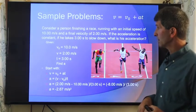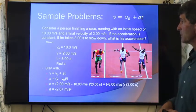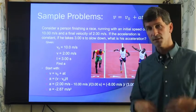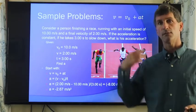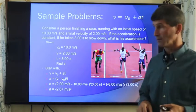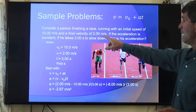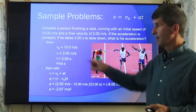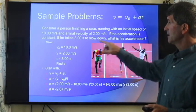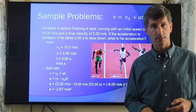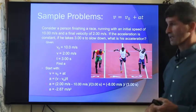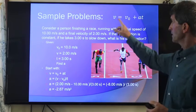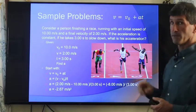I'll do another example, using the same equation. Consider a person finishing a race, running with an initial speed of 10 meters per second. So this is after the race. They've sprinted down the track, they're at 10 meters per second, they're now slowing down. The final velocity is going to be 2 meters per second. So you start at 10, end up at 2. If the acceleration is constant, it takes place in 3 seconds, what is the acceleration? Now again, we're solving for an unknown. We know this, we know this, we're trying to find this, we're getting that.